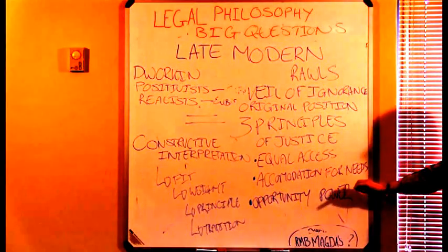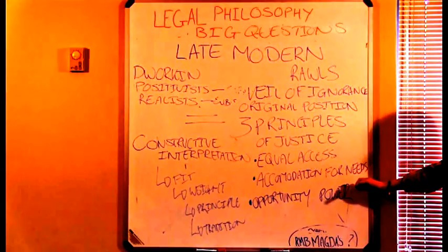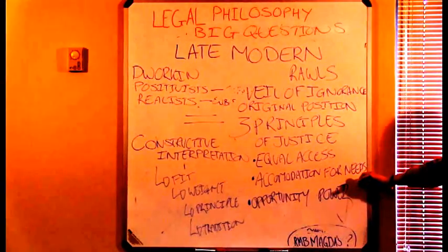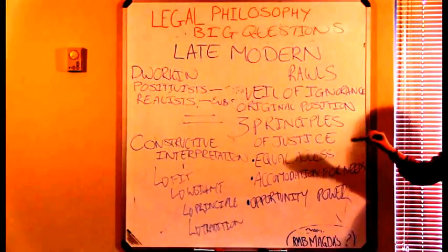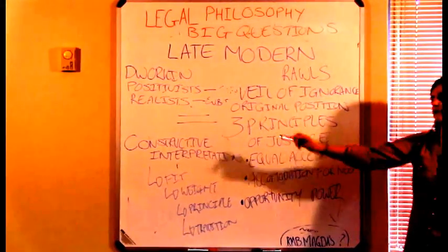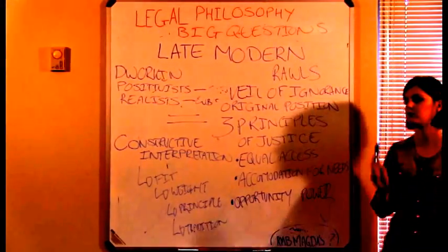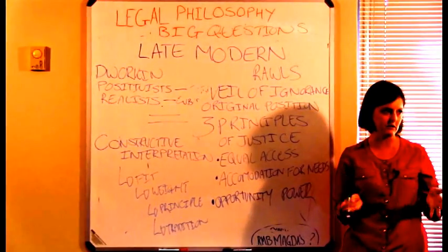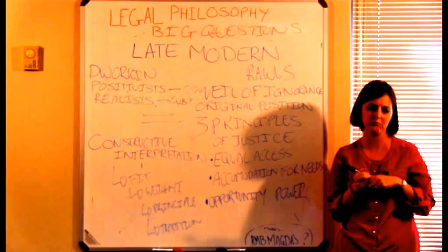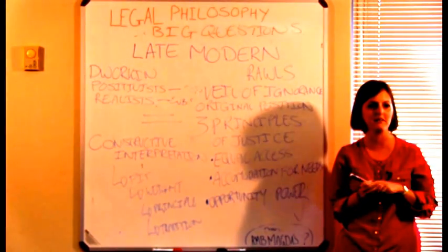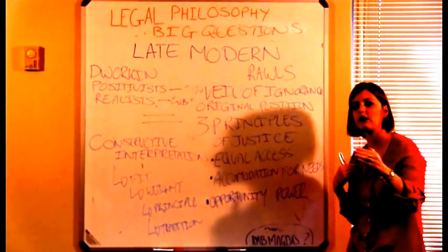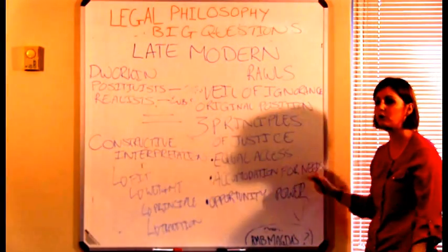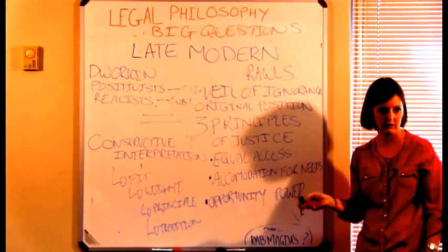Can you see these principles in our legal system? Yes, you can. Do you think the drafters of the constitution put themselves under a veil of ignorance in the original position when they were drafting the constitution? Well, we don't know that they did that. I think it's probably unlikely, but you can certainly interpret Rawls into that situation because we do have these three principles in our constitution.